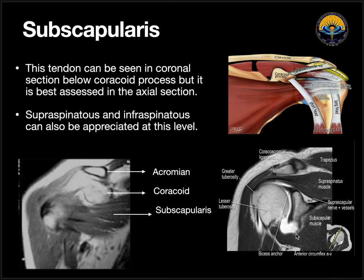Next is the subscapularis tendon. The subscapularis tendon can be seen below the coracoid process. Just as we look for the acromioclavicular joint and see supraspinatus below it, for subscapularis we find the coracoid process and see subscapularis muscle below it. To see subscapularis more beautifully, we use axial sections, where we can see the subscapularis muscle, its tendon, and its insertion on the lesser tuberosity.